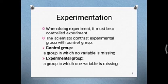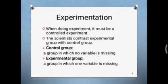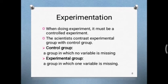What is a controlled experiment? Write the definitions of control group and experimental group from the box on page 23. A controlled experiment must be used whenever we perform an experiment. It has two groups: control group and experimental group. The definition of control group is: a group in which no variable is missing. The definition of experimental group is: a group in which one variable is missing.